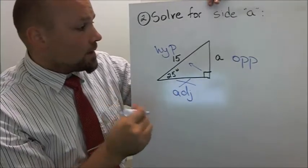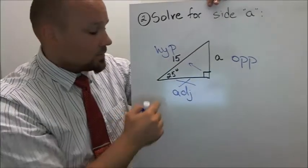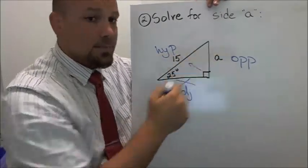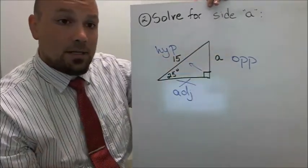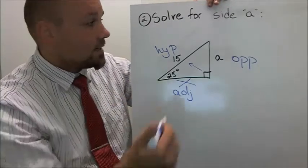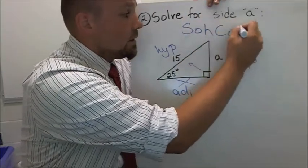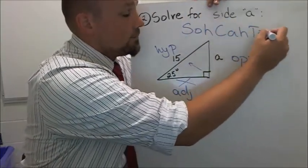So now I have hypotenuse and opposite. So I have an angle, hypotenuse, and opposite. So I know that I'm going to need to use either sine, cos, or tan, but to decide which one, all I have to remember is SOH, CAH, TOA.